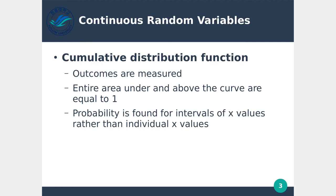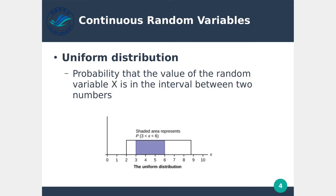Looking at the uniform distribution — this is the first distribution we're looking at. A uniform distribution essentially means all possible values have the same probability of being true. In this case, the values 2, 3, 4 through about 8-something all have the same probability of happening — that's why it's called uniform, because there's no curve, just a uniform line. Notice there is zero probability at 9 and 10, and zero probability at 1 or 0, while 2 through 8-something all have the same probability.